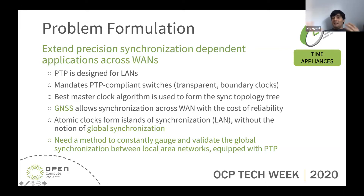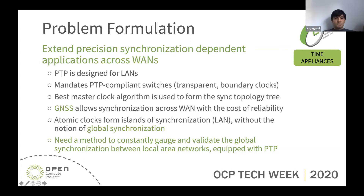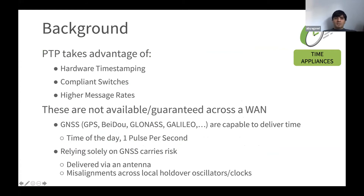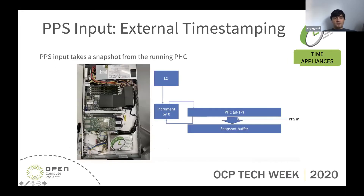There is still a need to gauge these islands of synchronization. The key hypothesis when going with synchronization across data centers is whether PPS signals from all GPS systems are trickling down from satellites within the advertised accuracy — some say less than 15 nanoseconds, some say 50, some say less than 100 nanoseconds. PTP takes advantage of hardware timestamping, compliance switches, and higher message rates.